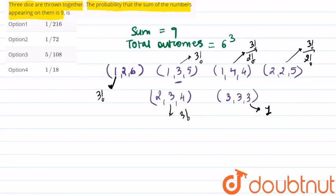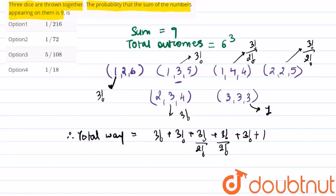is just one case. So total ways in which 9 can appear is 3! + 3! + 3!/2! + 3!/2! + 3! + 1. Therefore the total